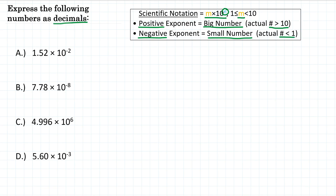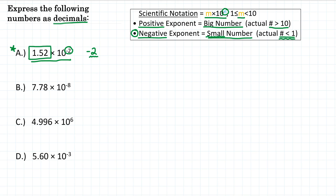So let's do a couple problems to see this in action. Question A says 1.52 times 10 to the negative second. What is this expressed as a decimal? Look at your exponent — it is negative 2. A negative exponent means we have a small number, something less than 1. If we have a negative 2 exponent, we're going to move the decimal point two spots, and because it's negative, we move it to make it a smaller number.